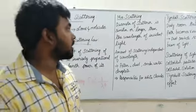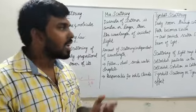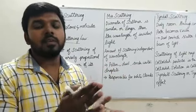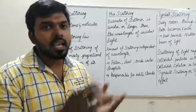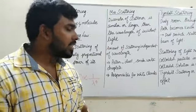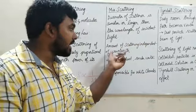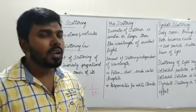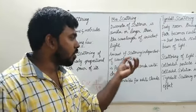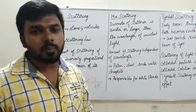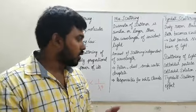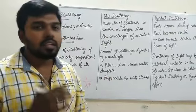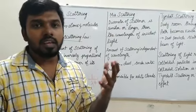The next type is Mie scattering. When the diameter of the scatterer is similar to the wavelength of the incident light, we call that scattering Mie scattering. In this case, the amount of scattering is independent of its wavelength. Examples of scatterers include pollen grains, dust, smoke, and water droplets. Mie scattering is responsible for the white clouds we see in the sky.